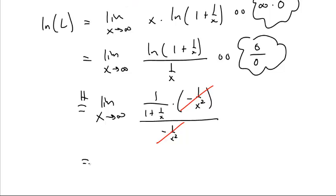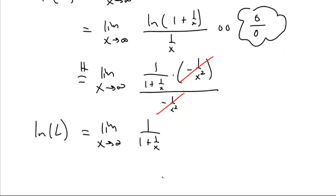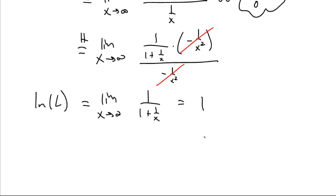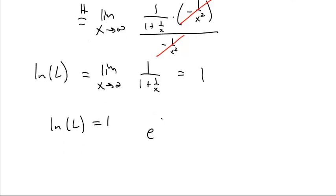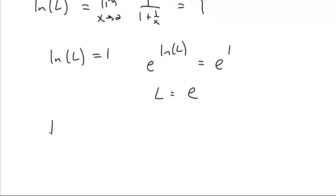So we have: the natural log of L equals the limit as x goes to infinity of one over one plus one over x. And one over x goes to zero, so this is one over one plus zero, which goes to just one. And if the natural log of L is one, then e to the natural log of L equals e to the one, and that tells us that the limit as x goes to infinity of one plus one over x all to the x power is e.